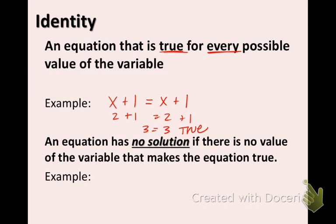Now the opposite of an identity is an equation that has no solution. And this happens when there is no value of the variable that makes the equation true. So nothing that you plug in will work. And here is an example, x plus 1 equals x plus 2. If we were to plug in any number for the x on both sides, we would get a false statement.